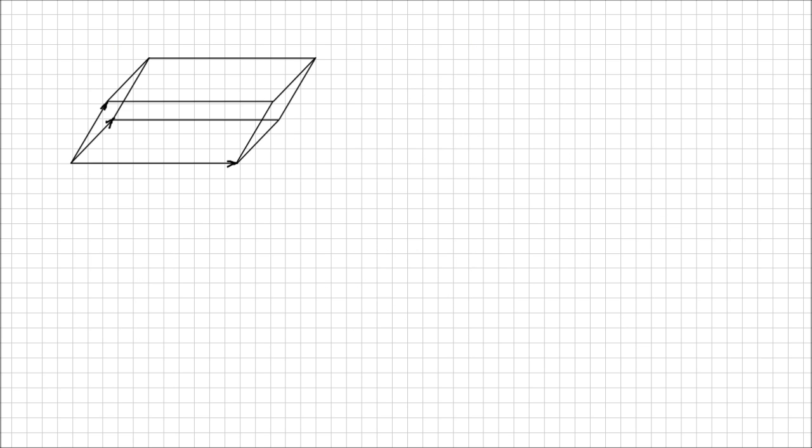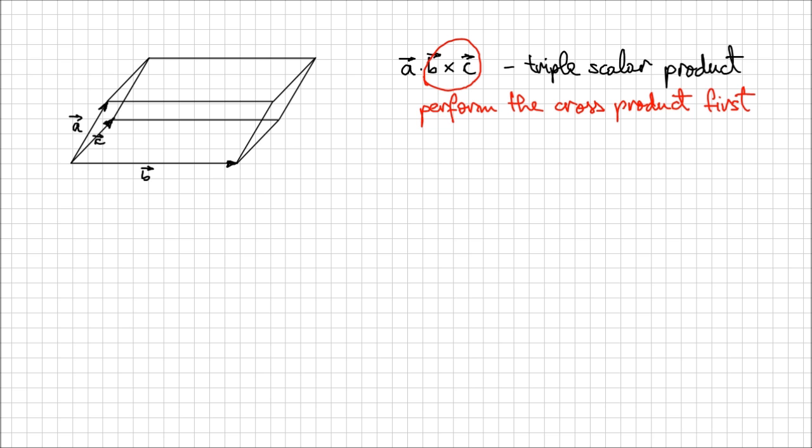There is another type of product that is basically a combination of the two dot and cross product, such as these, a dot b cross c. So it's a combination of the dot and cross product, and we call this a triple scalar product. Pay close attention that this cross product between b and c has to be performed first, because if you would perform the dot product between a and b first, that will result in a scalar, and then you will have a scalar cross a vector, which has no meaning. So therefore, we cannot do that. We always have to start with a cross product, which will result in a vector, and then we're going to have a dot product between two vectors, which is very easy to calculate.